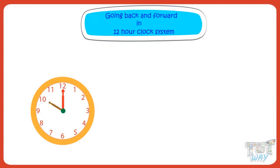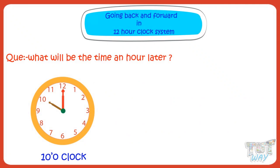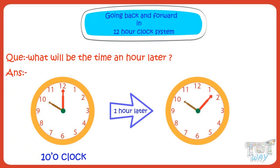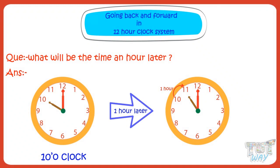The clock is showing 10 o'clock. What will be the time an hour later? The minute hand completes one round of the clock in an hour, so it will reach 12 after an hour again. The hour hand will reach the next number in an hour, so the hour hand will reach 11. So it will be 11 o'clock after an hour.